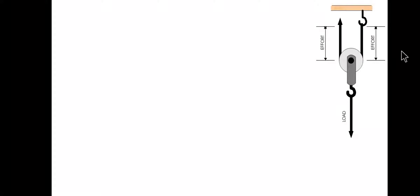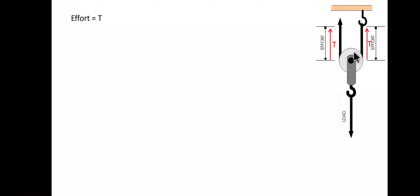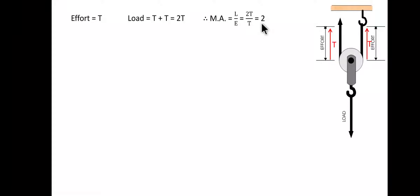Let's learn about the single movable pulley. Here we can see the effort is applied upwards on both sides. The effort equals tension T. The load is equivalent to the effort applied at both ends, so load equals T plus T, which equals 2T. Therefore, mechanical advantage equals load by effort, which is 2T divided by T, equals 2. So the mechanical advantage of a single movable pulley is equal to 2.